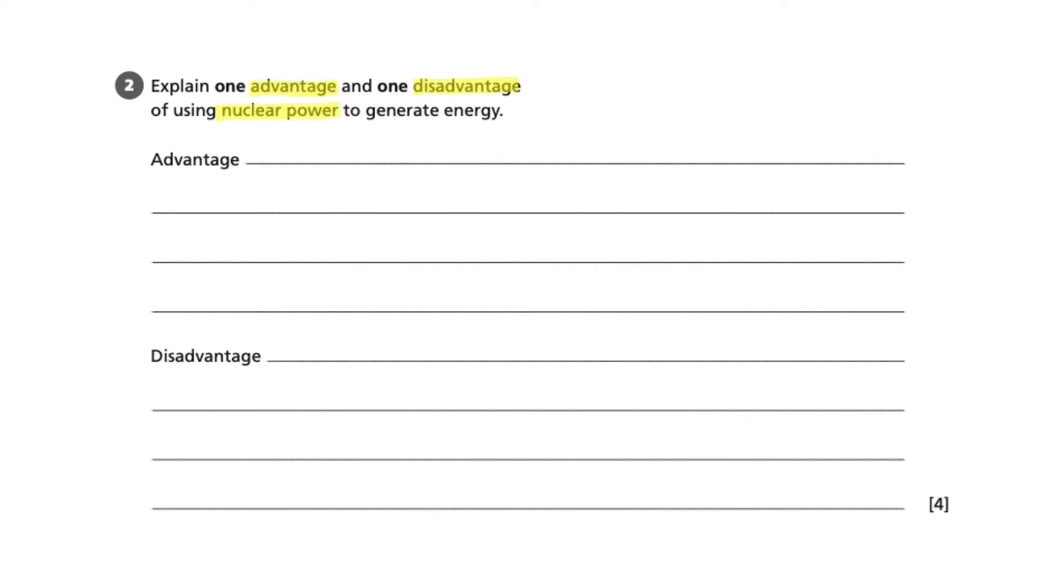The key words here for this question are advantage, disadvantage, and nuclear power. We can also see that our command word is explain, which means to suggest reasons why, and that we are being awarded four marks for this question. We can therefore assume that there are two marks available for the advantage that we write and two marks available for the disadvantage.